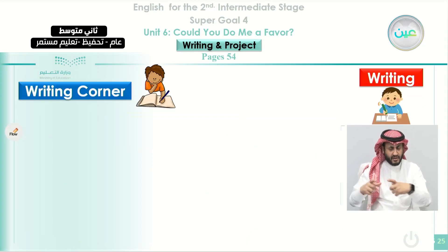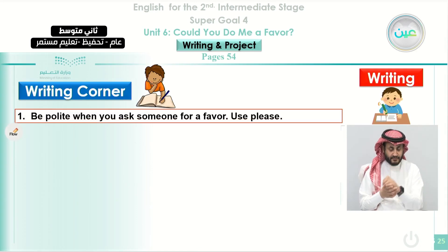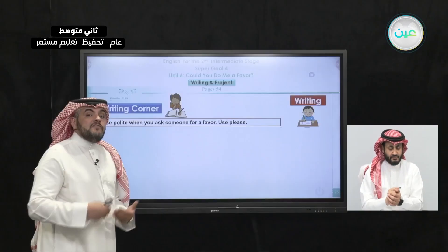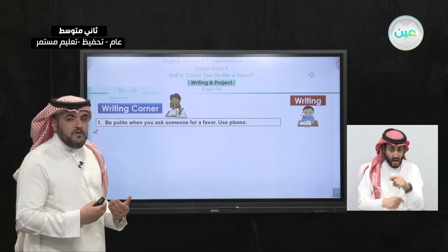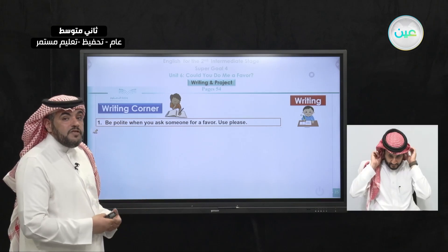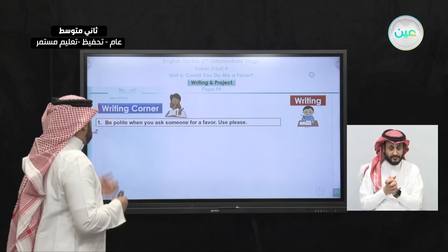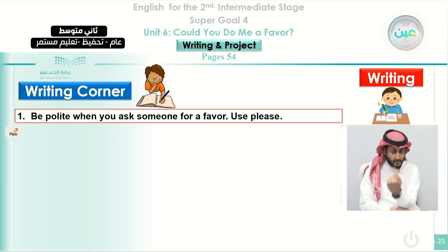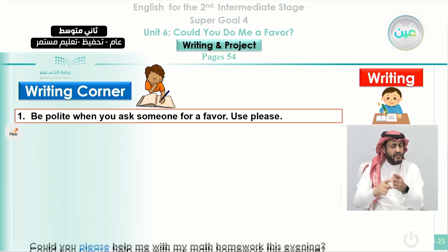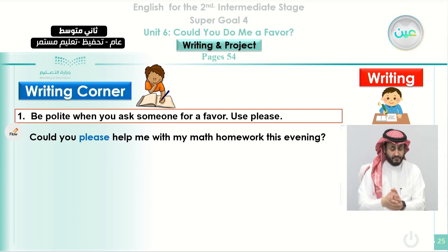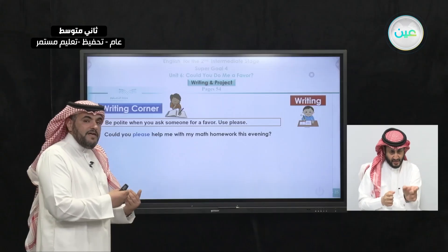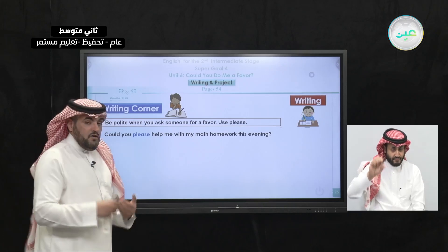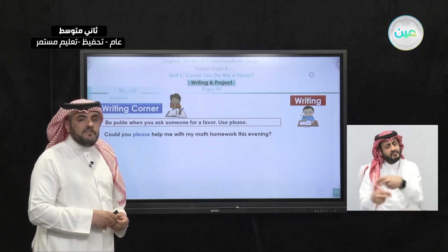Now we study the writing section — the writing corner on your book, page 54. Whenever you want to ask for a favor, the title of this unit is 'Could you do me a favor?' You have to be polite and ask politely for what you need. So be polite when you ask someone for a favor, and also include 'please'. For example, if you ask somebody to help you with your homework: 'Could you please help me with the math homework this evening?' Notice where we place 'please' — you can place it in the middle: 'Could you please help me?' or at the end of the sentence.